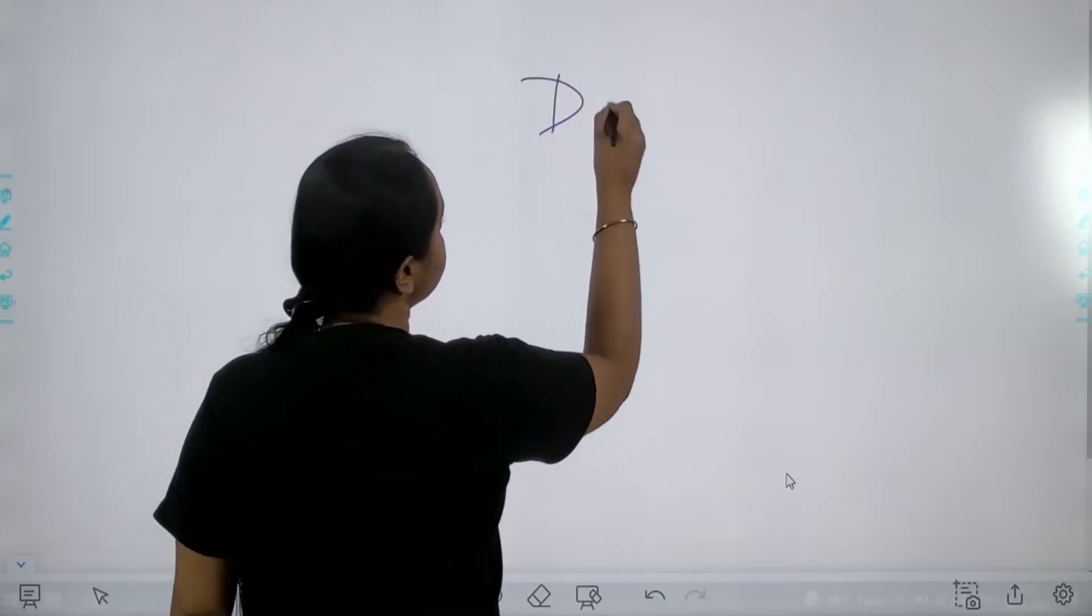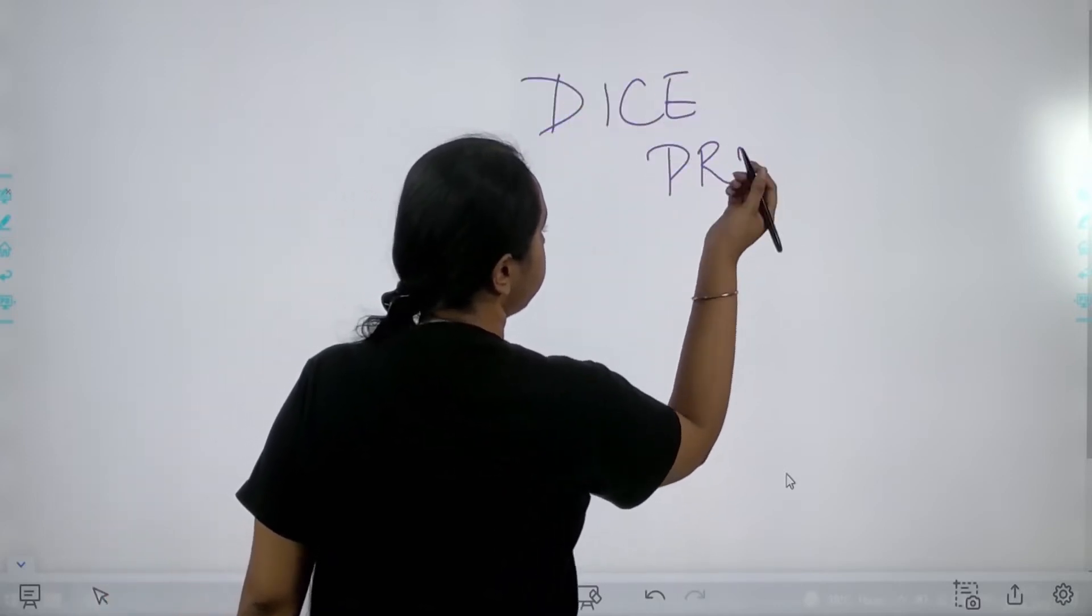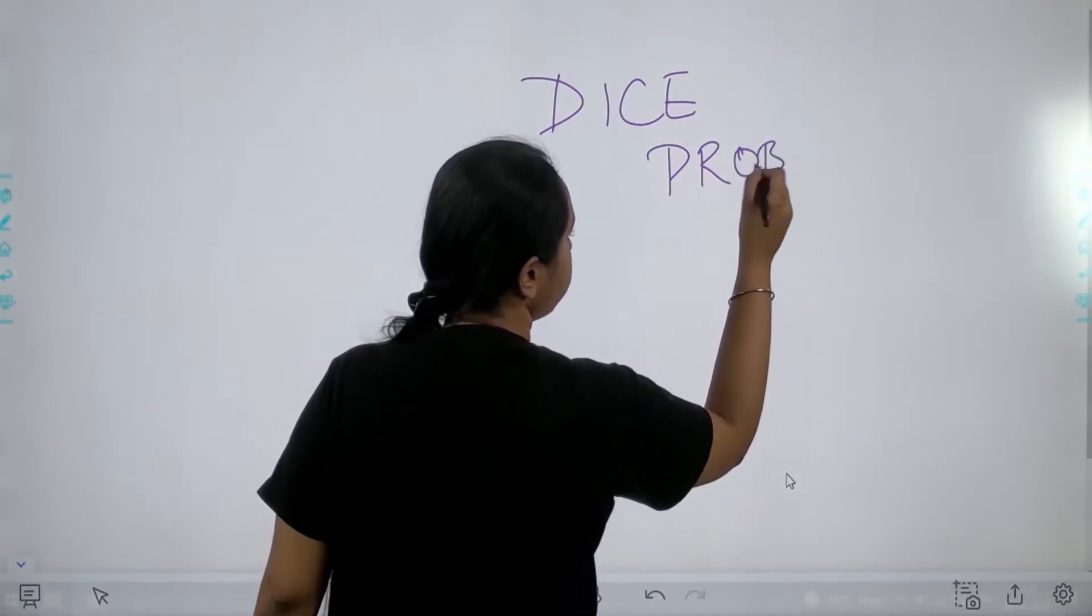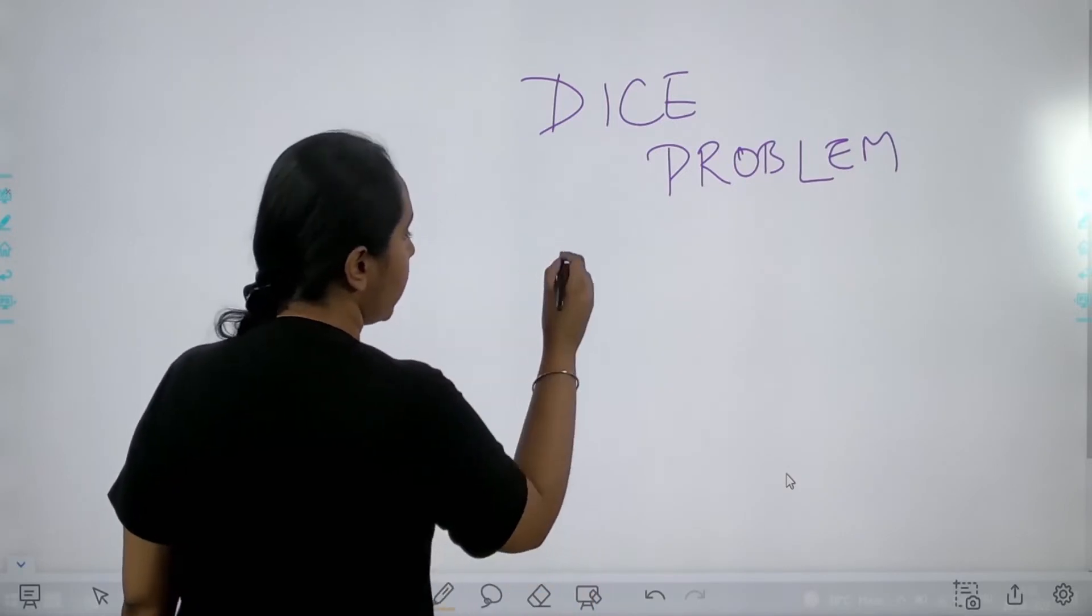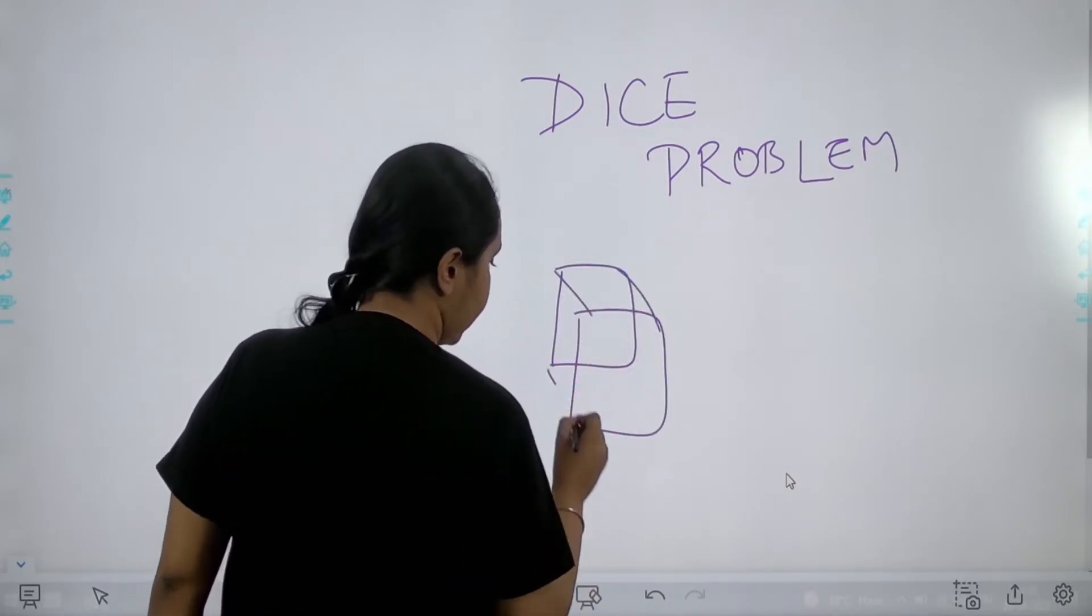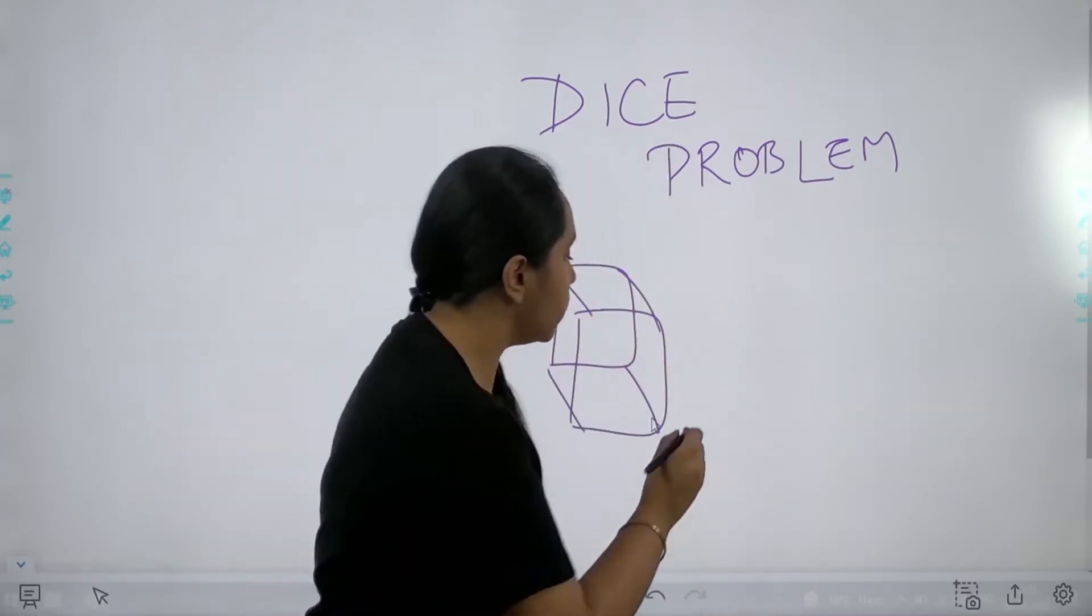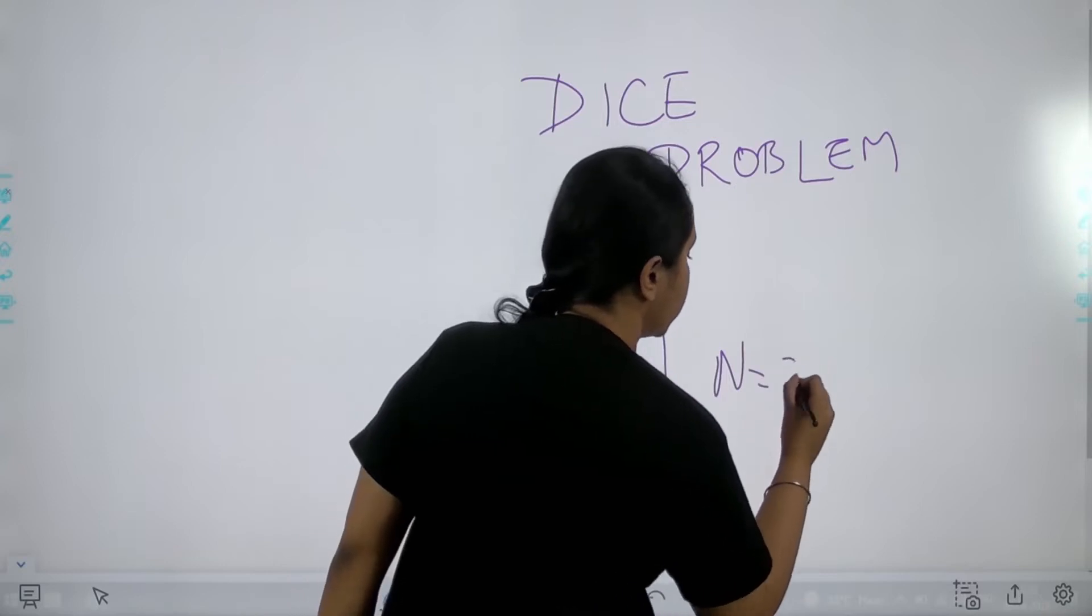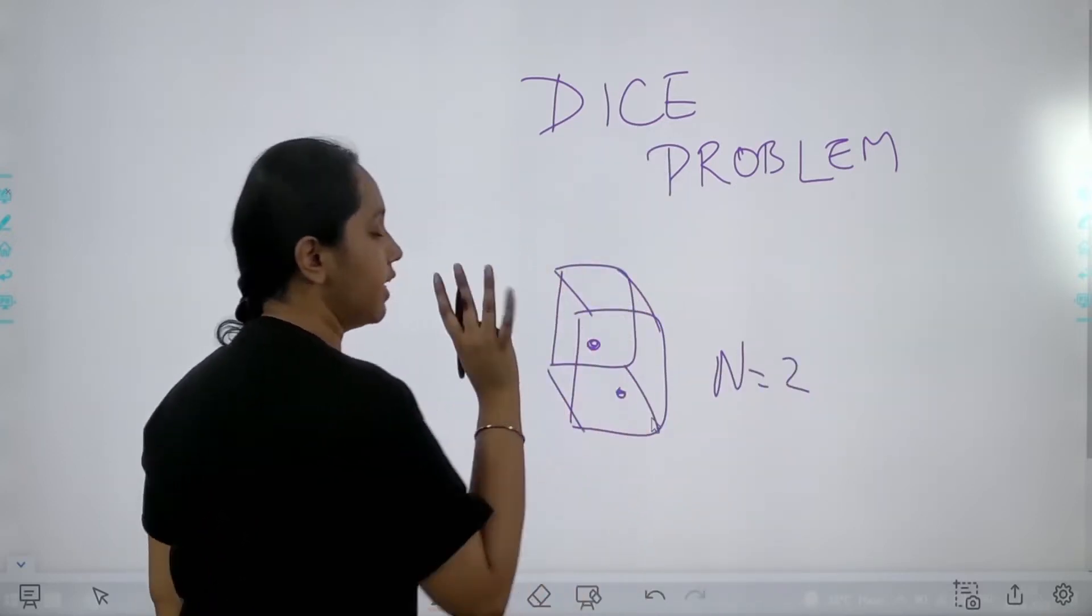So today's problem is the dice problem. So first let us understand the problem. In this problem you are given a dice and they are saying they would tell you a number. For example they would tell you n is 2. This means right now in the front face you can see number 2.